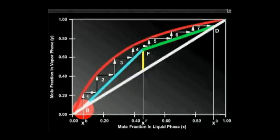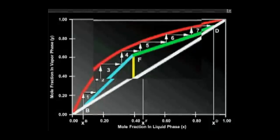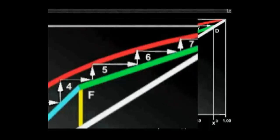If we zoom into a stage in the rectifying section, we can see that the upper operating line gives the relationship between yn-1 and xn. This is the mass balance between the passing streams.